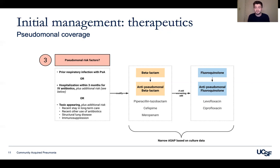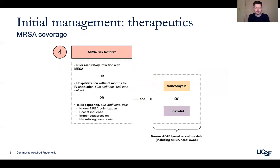After deciding on pseudomonal coverage, ask yourself if you need MRSA coverage. MRSA risk factors include prior respiratory infection with MRSA, hospitalization within the last three months with IV antibiotics, or a very ill patient with features such as known MRSA colonization, recent influenza (a risk factor for secondary MRSA pneumonia), immunosuppression, or necrotization on imaging. In these cases, add vancomycin or linezolid to your regimen. The MRSA nasal swab is quite predictive — if negative, it's appropriate to remove MRSA coverage.